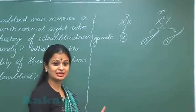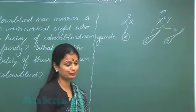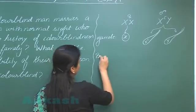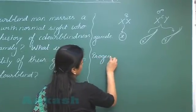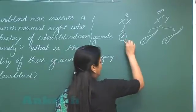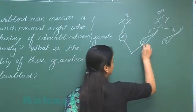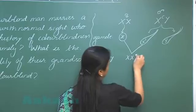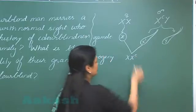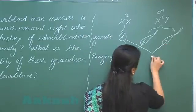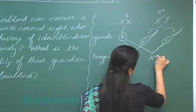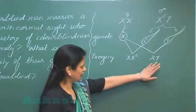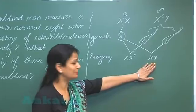After fertilization, let's see what the progeny would be. If this egg is fertilized with this sperm, this condition is obtained. If this fertilization occurs, then this would be the chromosome complement.